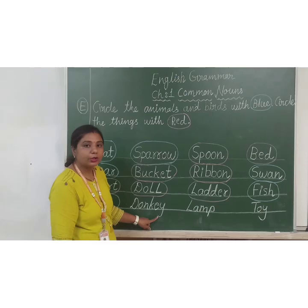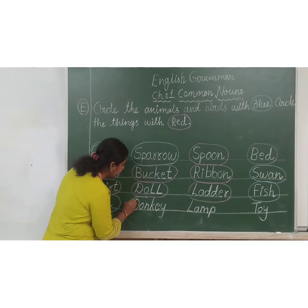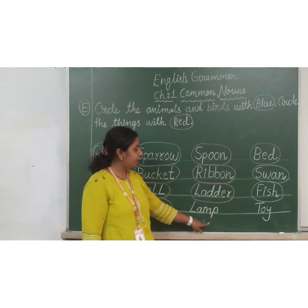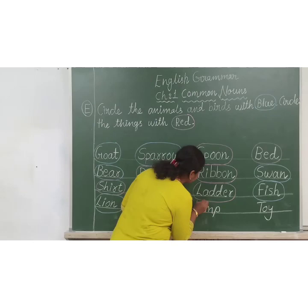D-O-N-K-E-Y. Donkey. Donkey is an animal. So here you have to circle with blue color again. L-A-M-P. Lamp. Lamp is a thing. So here you have to circle with red color.